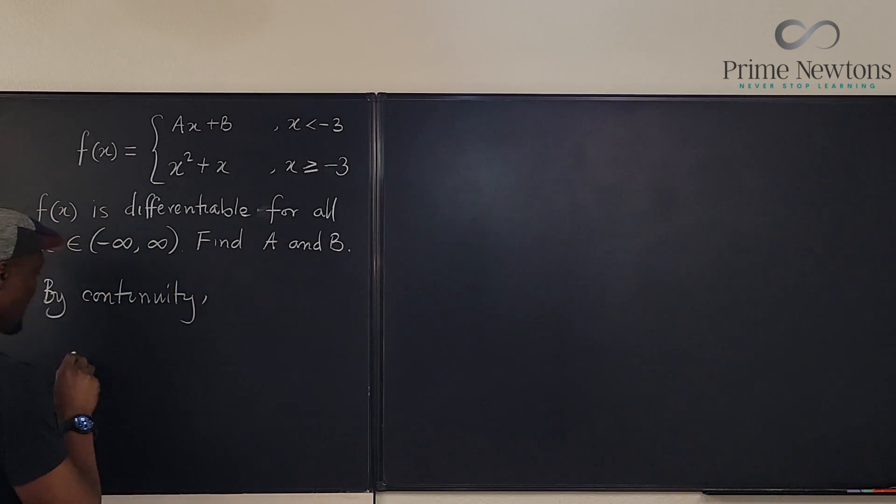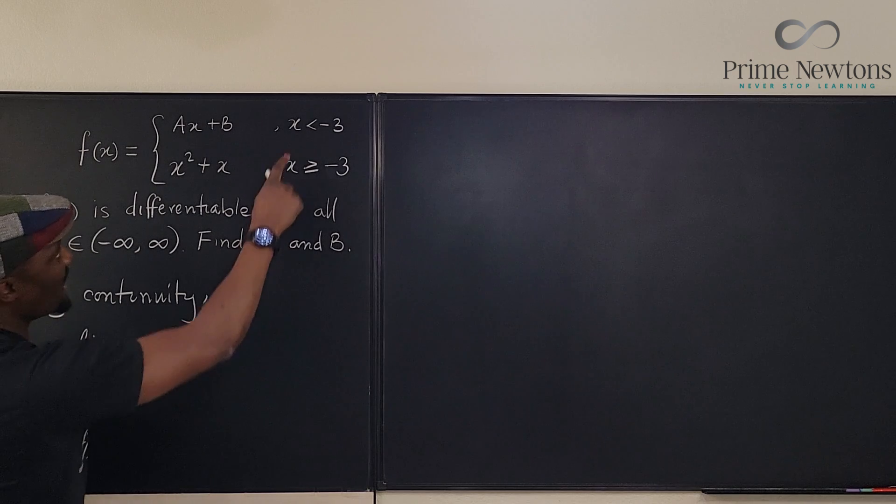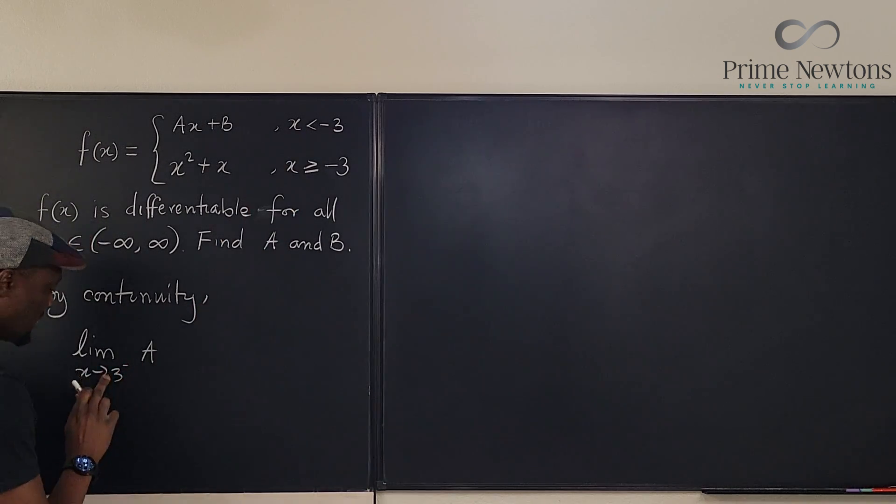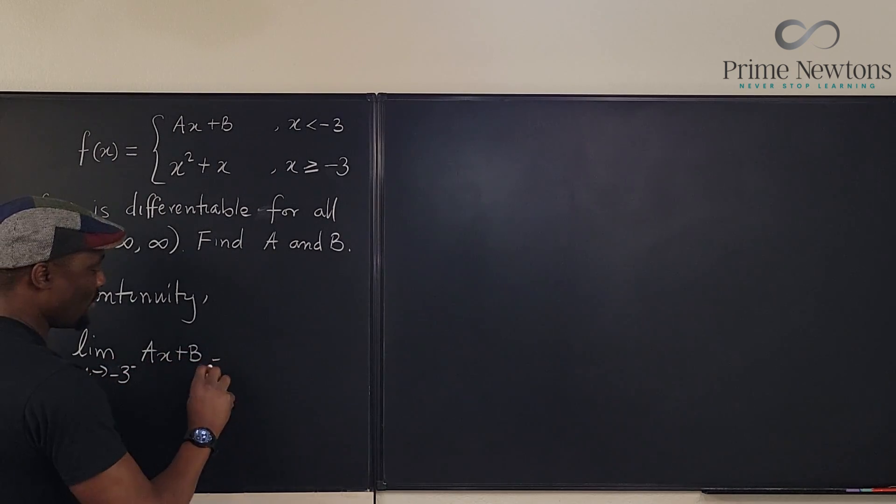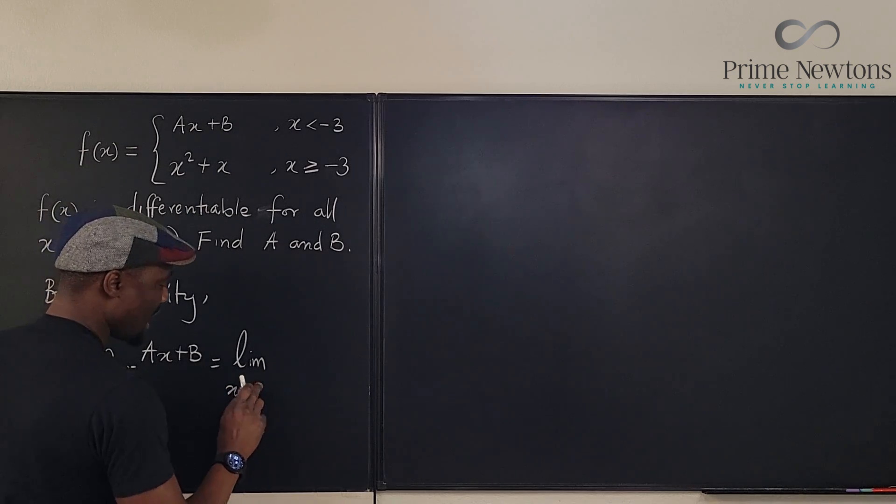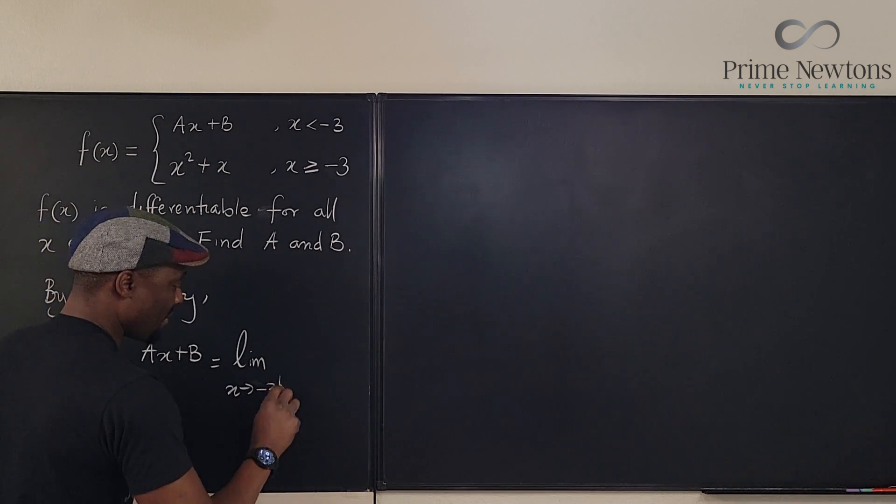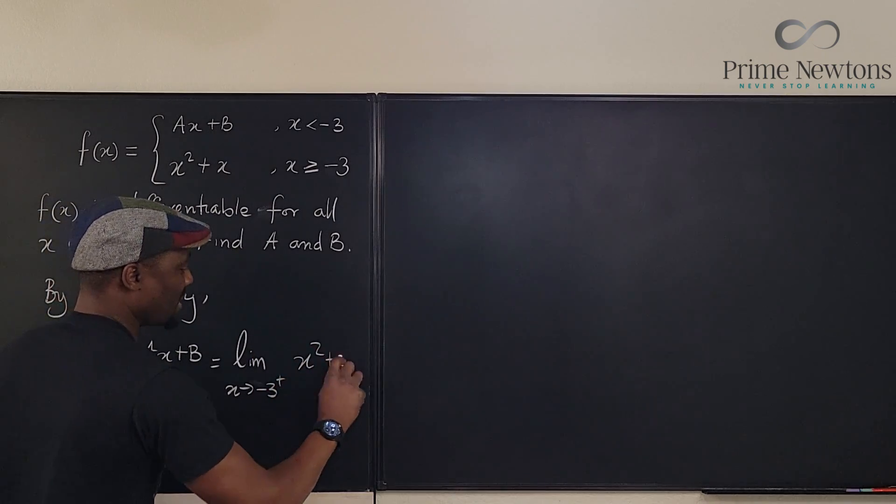we know that the limit as x approaches minus 3 from the left, which is going to be, is it from the left? Yes, because it's less than minus 3. Minus 3 from the left of ax plus b will be equal to the limit as x approaches negative 3 from the right.